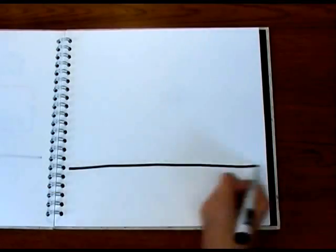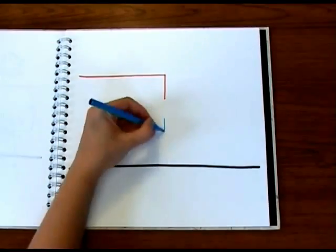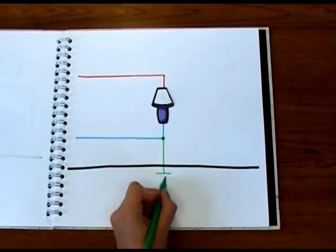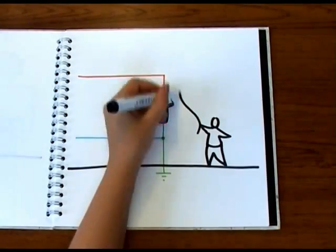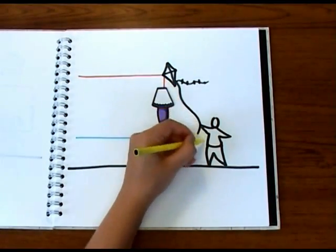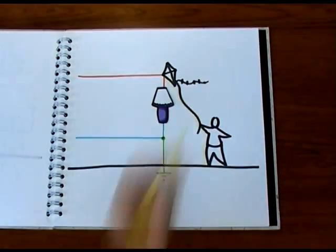But if you stand on the ground and touch a live cable directly, you're effectively connecting it via your body and the ground to the neutral line. This completes the circuit and you get electrocuted.